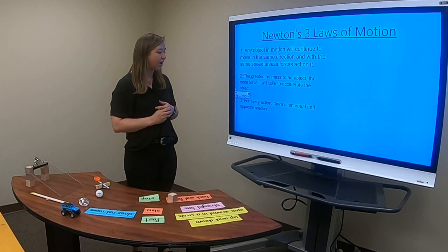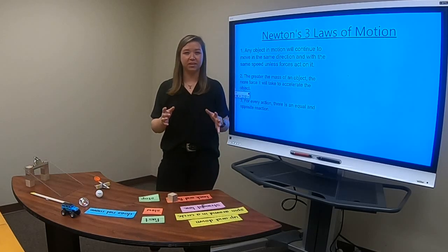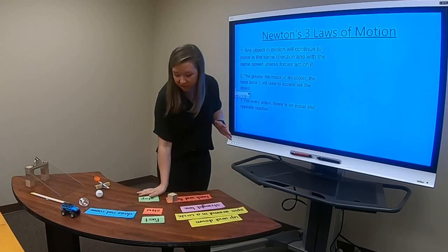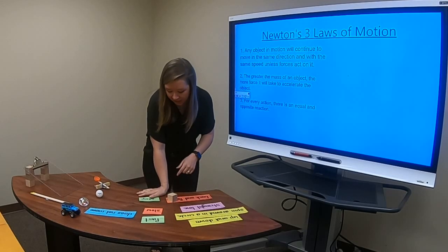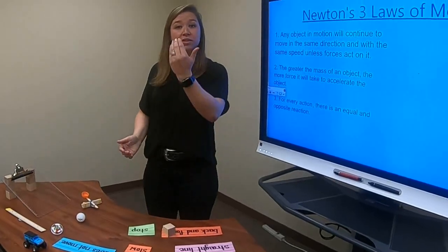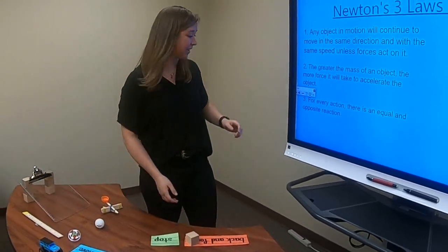Number three says for every action, there is an equal and opposite reaction. And I know this one sounds really hard, but I think a really good example of this one is if you take your hand and push down on a table. Okay, so I'm pushing on a table. You might not can see it, but I'm pushing on a table and I'm pushing down really, really hard, but the table is also pushing back. That's why it doesn't collapse as I'm pushing my hand down.